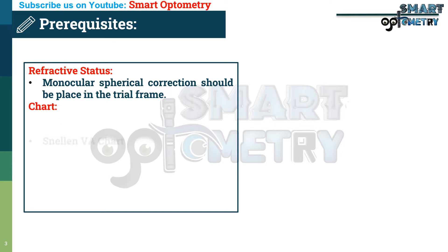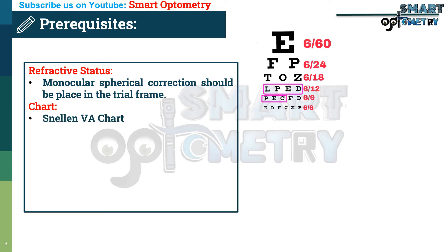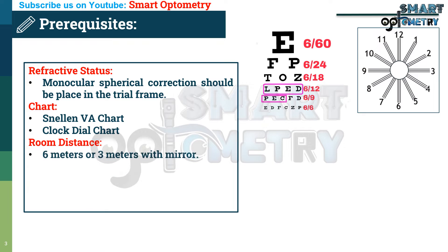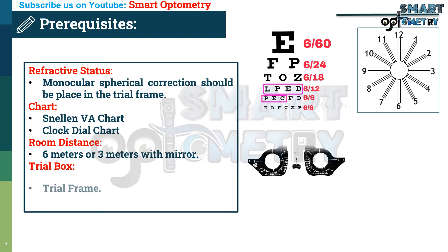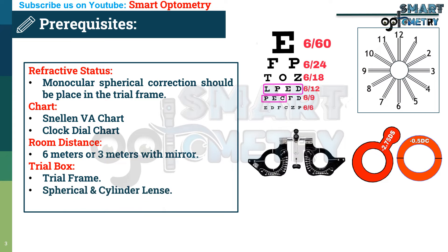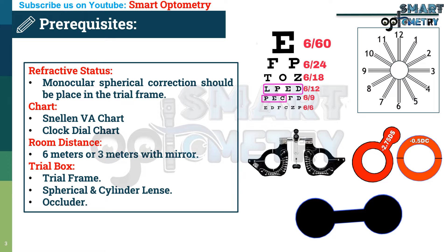The following will be needed: a distance visual acuity chart and a clock dial chart. Room distance should be 6 meters, or 3 meters with a mirror. From the trial box, you will need a trial frame, spherical and cylinder lenses, and an occluder.